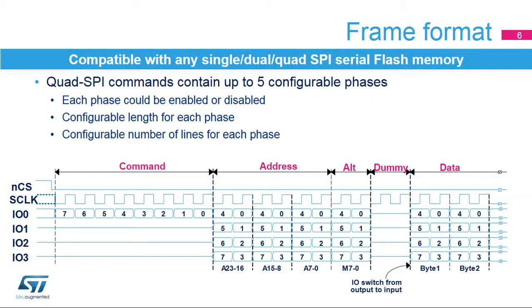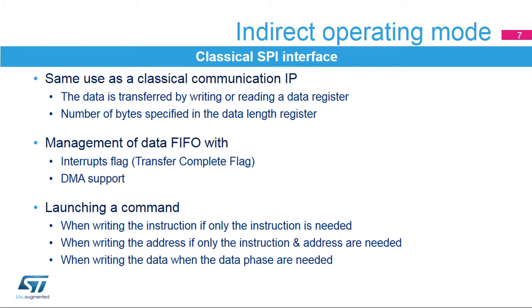The Quad SPI Memory Interface offers high flexibility in frame format configuration. This flexibility allows it to address any serial flash memory. Users can enable or disable each of the five phases and configure the length of each phase, as well as the number of lines used for each phase.